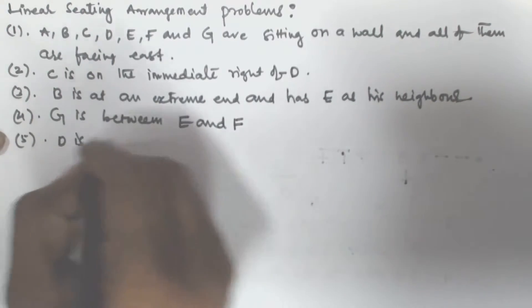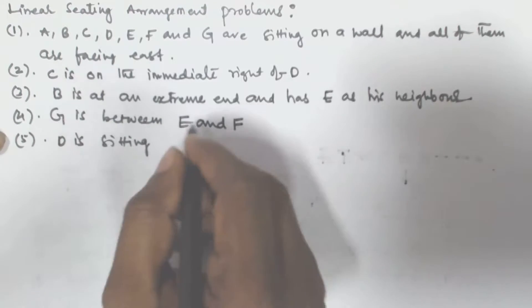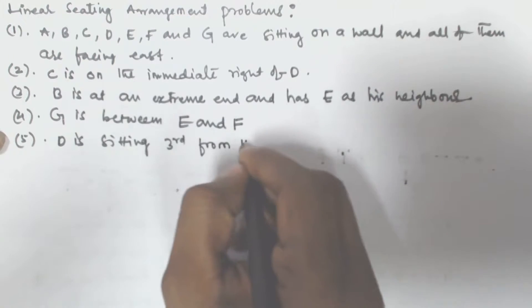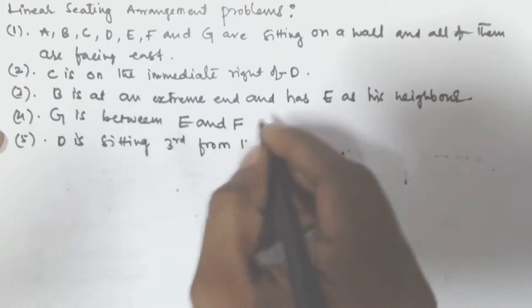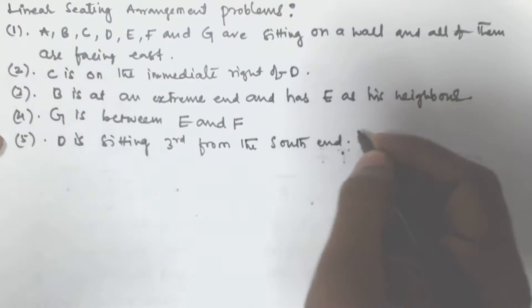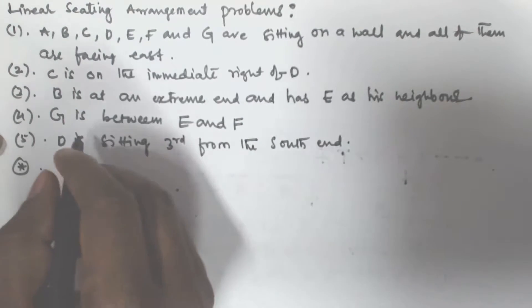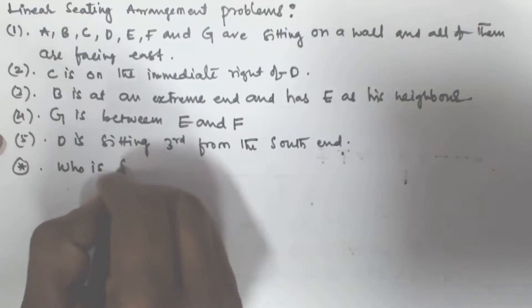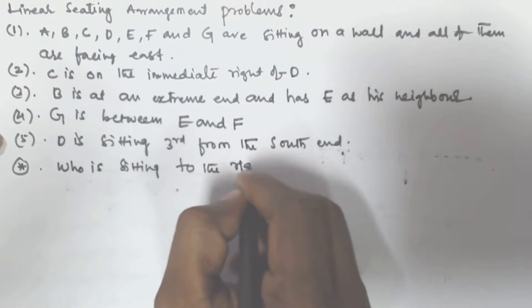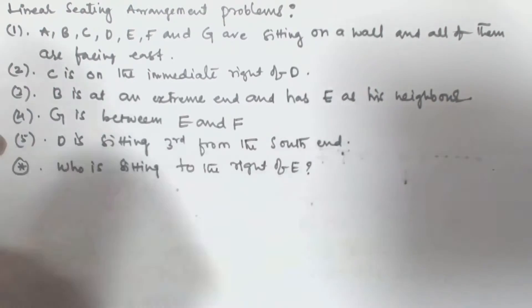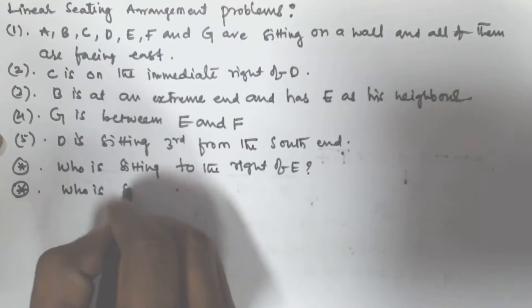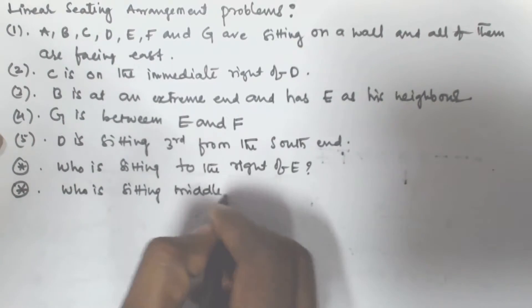The fifth point given is D is sitting third from the south end. We have to answer the following questions: who is sitting to the right of E? That is the first question.